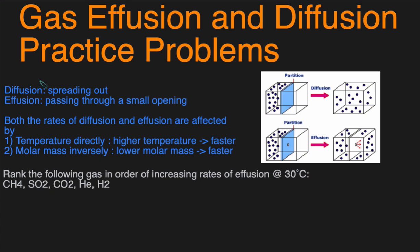Let's start off with the definition of diffusion and effusion. Diffusion is the process of spreading out. As you can see in the picture here, when we take the partition out, the gas spreads apart. Effusion, on the other hand, is the process of passing through a small opening. So we had a partition with a small opening. Effusion is the process of the gas molecules going through that small opening.